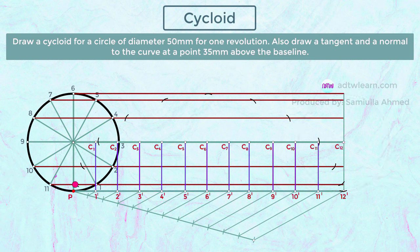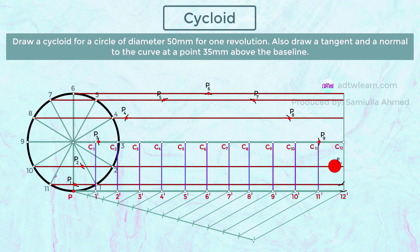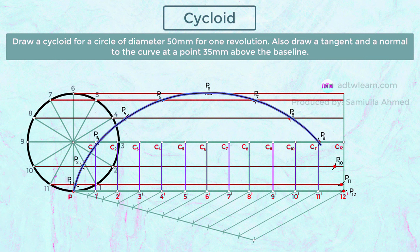Mark these points as P1, P2, P3, P4, P5, P6, P7, P8, P9, P10, P11, and P12. Join all these points P1 through P12 to get the cycloid. This is the cycloid curve, and this is how we draw a cycloid of a circle.